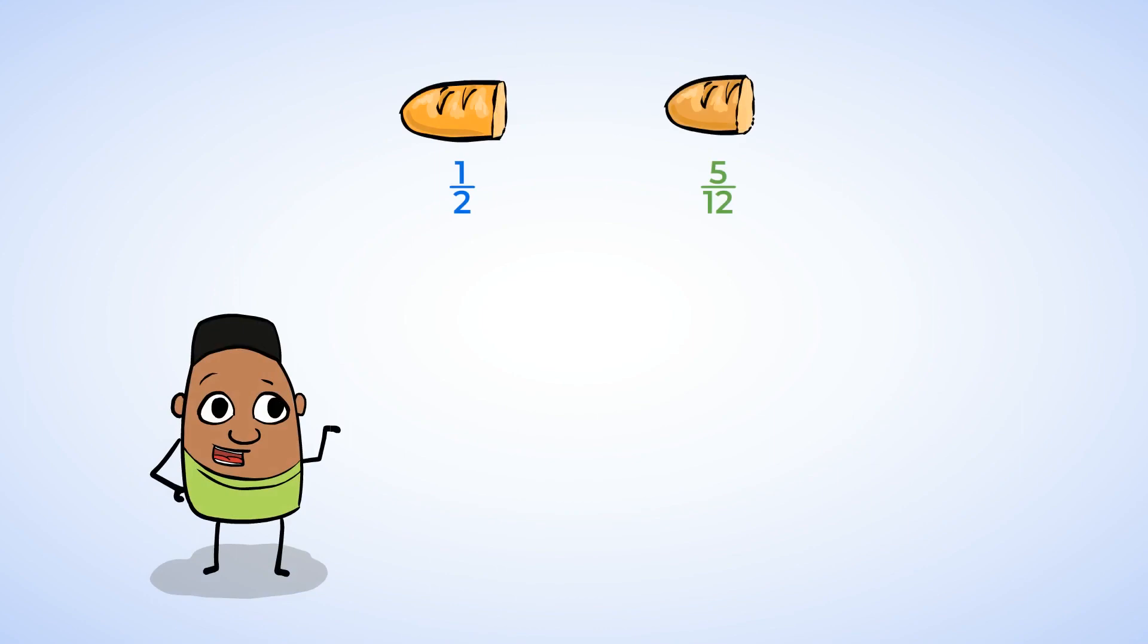All right, we need to compare two fractions: one half and five twelfths. Just by looking at those fractions, it's hard to tell how big they are compared to each other. And that's because the denominators are different. But if we change the fractions so that they have the same denominators, well then the pieces will all be the same. So let's use multiplication to change them into equivalent fractions. Looking at the denominators of two and twelve, we notice that twelve is a multiple of two. And that means we can multiply two by six to get to twelve.